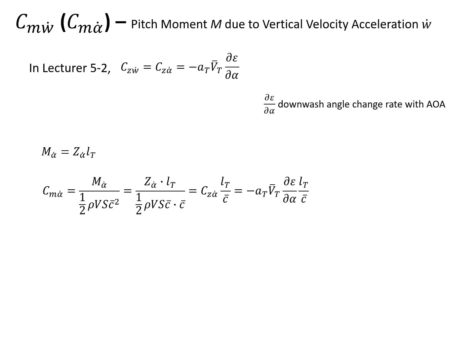Since we're looking at the non-dimensional derivative, we find a denominator the same as the previous one. We replace M alpha dot by Z alpha dot times LT. The next step is we get CZ alpha dot times LT divided by C, and we plug in CZ alpha dot to eventually have this equation. The derivation is straightforward because we've already done the major work in CZW dot. If we compare CM alpha dot with CZ alpha dot, the difference is LT divided by C.